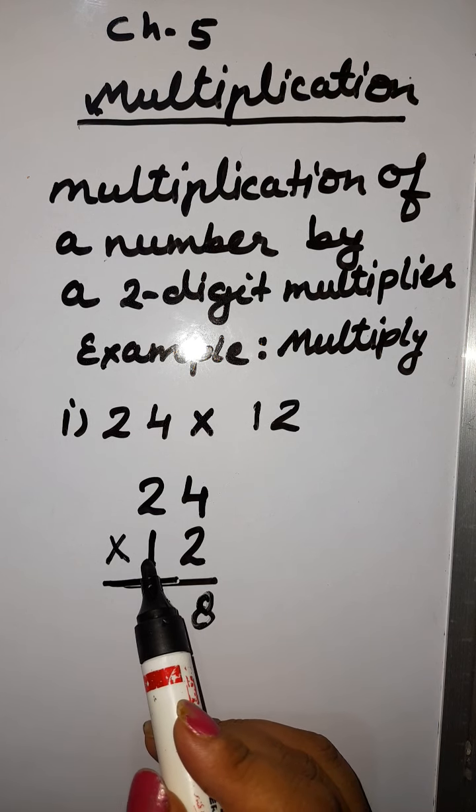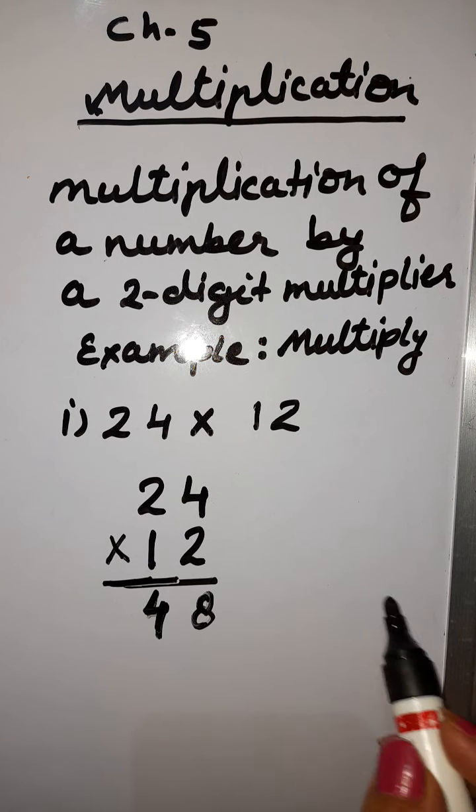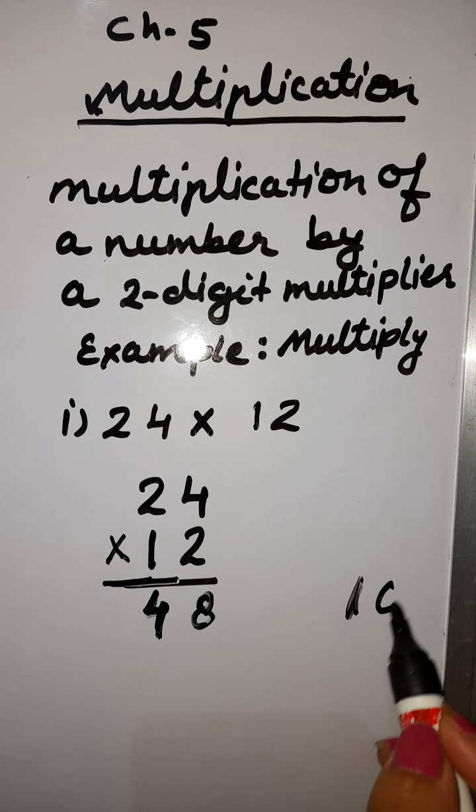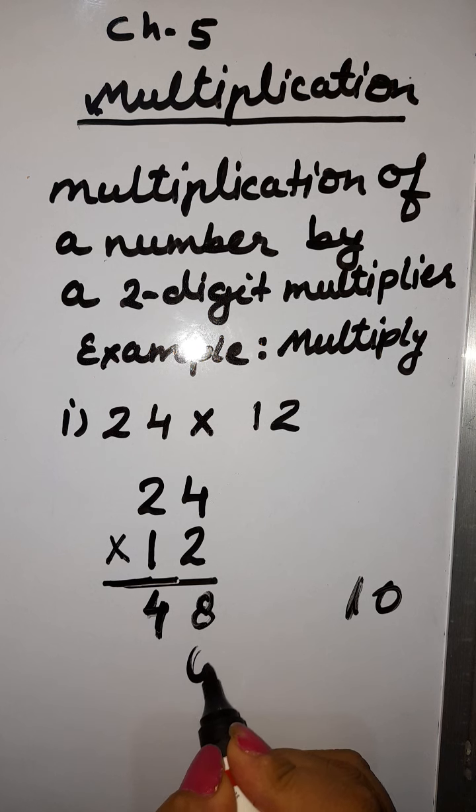So we will multiply 10. The place value of 10 is 10. That's 1, 0. So this will become 0. So here we will write 0.